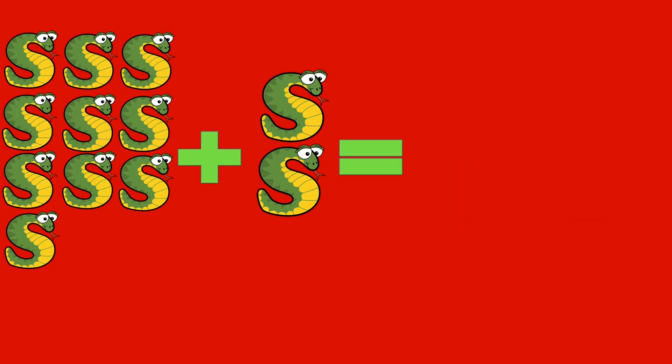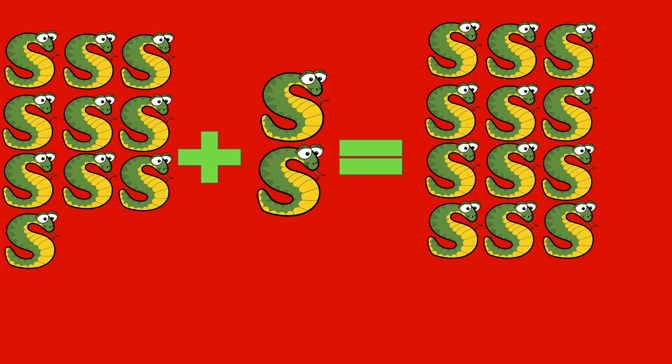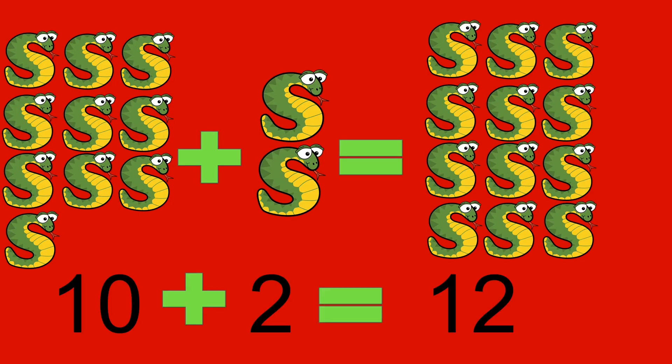10 snakes plus 2 snakes equals 12 snakes. 10 plus 2 equals 12.